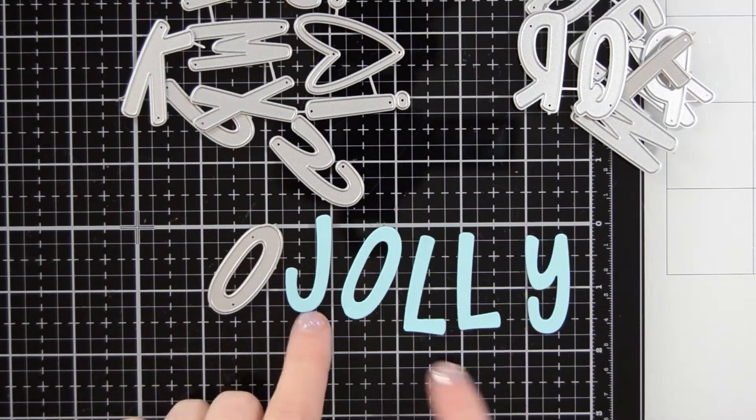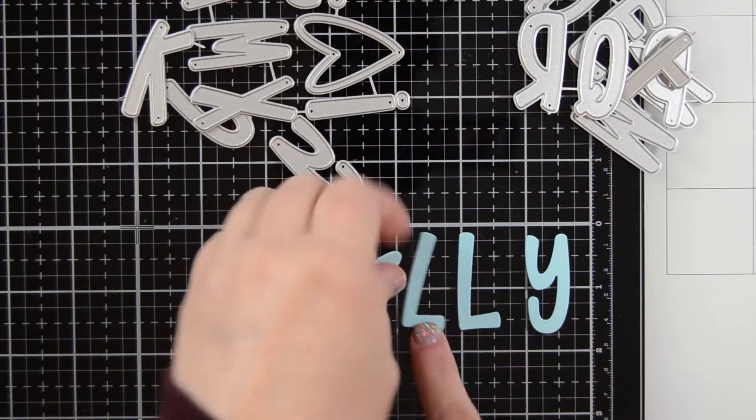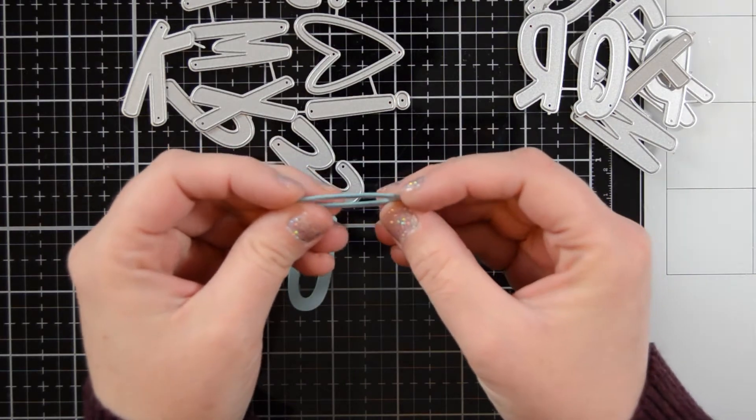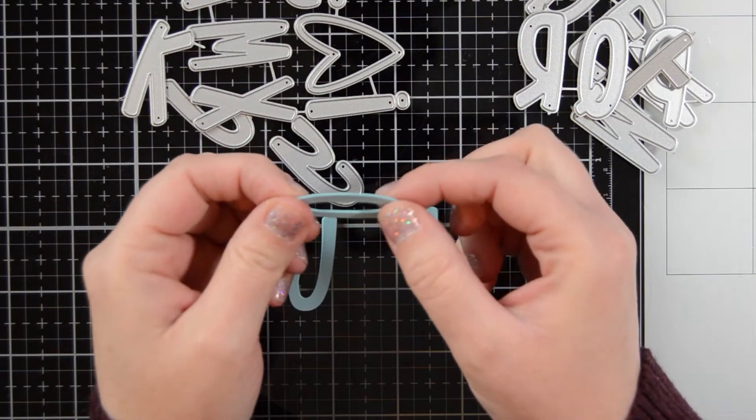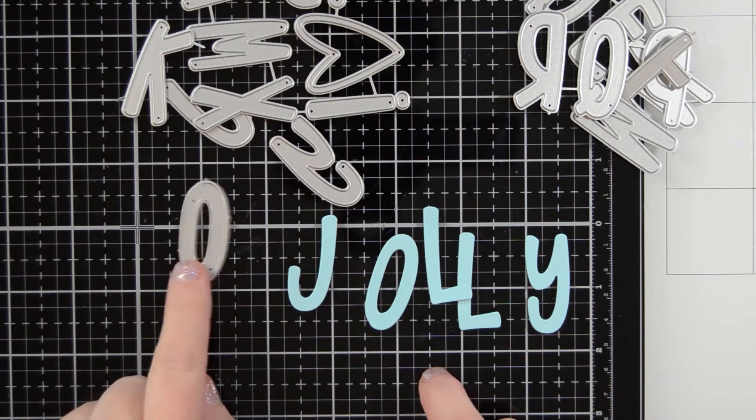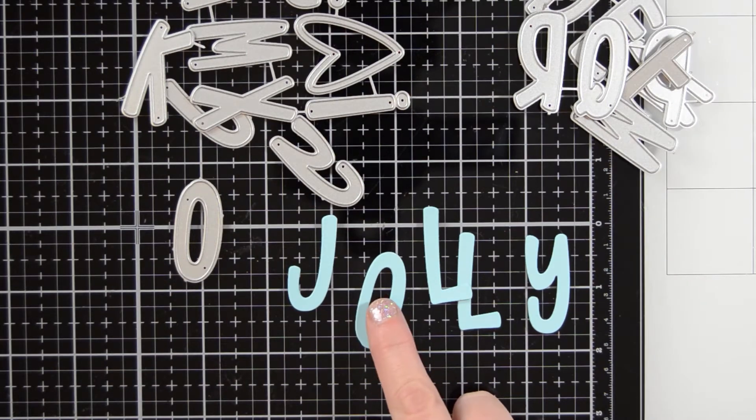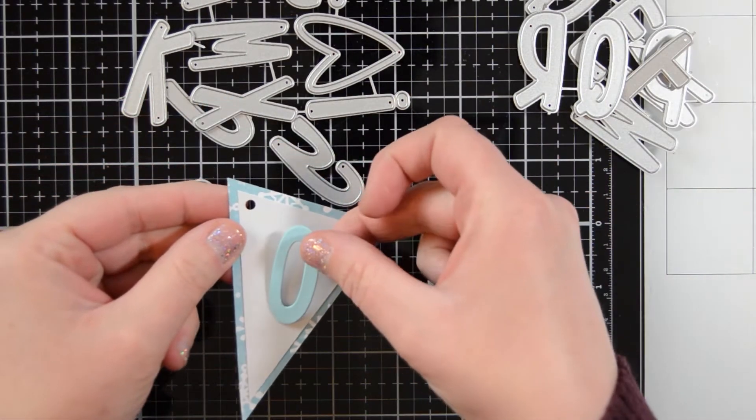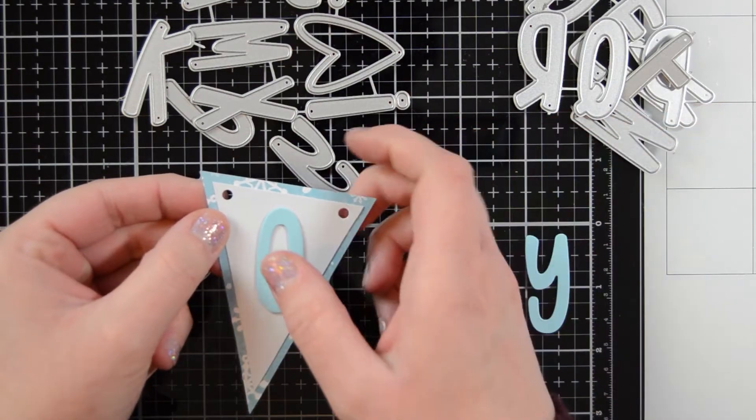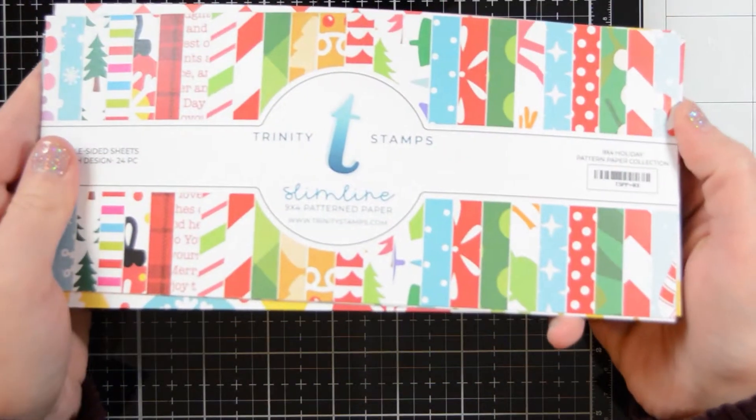Anyways now I'm moving on to my letter. So I'm using our marshmallow alphabet set and I've gone ahead and layered up each letter with three sheets of cardstock, three pieces of cardstock just to give it a little bit more sturdiness since this will be kind of a decor piece.